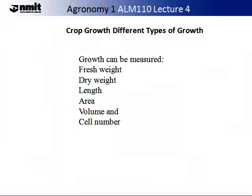Growth rates can be measured by either weighing the fresh weight of the plant, putting the plant into an oven until constant weight is obtained — this is called the dry weight — measuring the length or the change in length over time, measuring the area that the plant covers, measuring the volume or change in volume over time, and you can count the cell numbers and measure those changes over time.